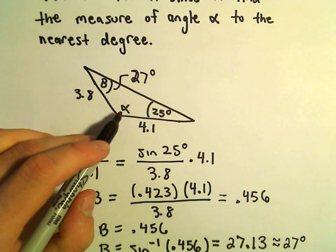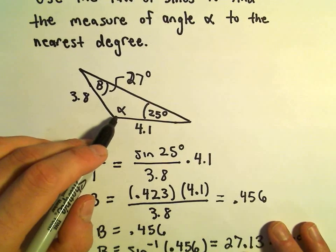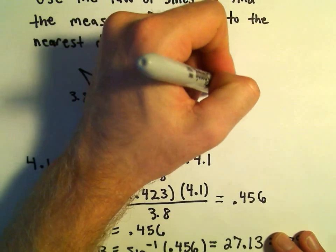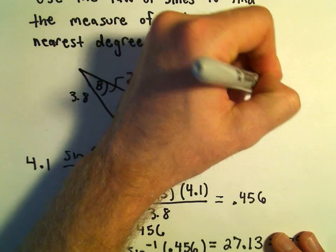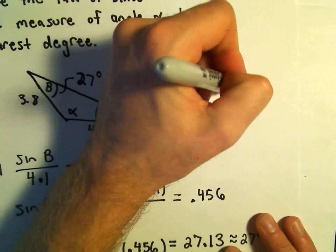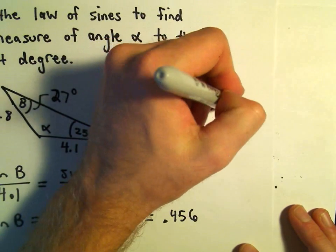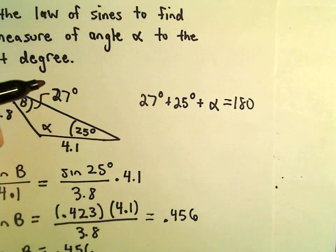Well, now again, we're really just interested in finding angle alpha. So, 27 degrees plus 25 degrees plus the measure of alpha. Now, we're adding up all the angles. That would simply have to add up to 180.